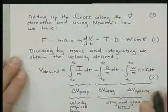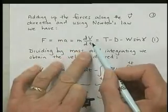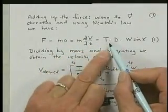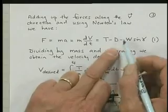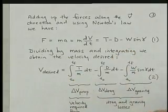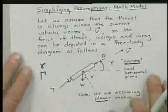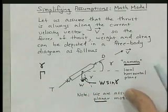If we add up the forces along the velocity direction, and using Newton's law, which is F equals M-A, A is the time rate of change of velocity. And so we have on the right T minus D, the thrust, which is in the direction of the velocity, minus D, the drag, which is in the opposite direction of the velocity, and then minus a component of the weight, which is along sine of gamma. So if we take the weight here and look at its component along V, it's this distance here. So we have W times sine of gamma, and it's in this direction, so it's negative.